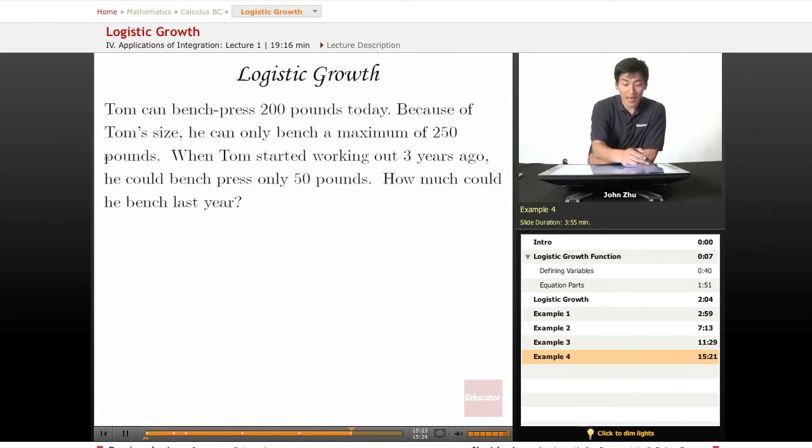For this example, we're looking at someone named Tom and their workout habits. Any type of growth, it doesn't have to be just population or a disease, it could be any type of growth model. Here it's applied to someone's progress with working out.